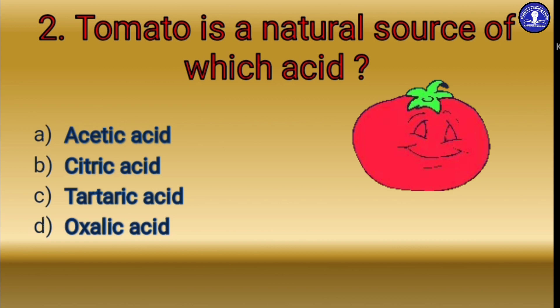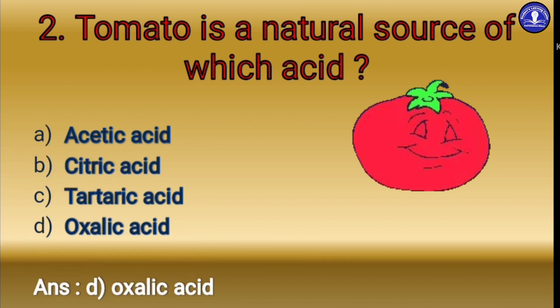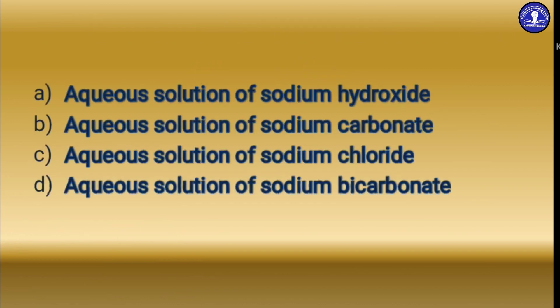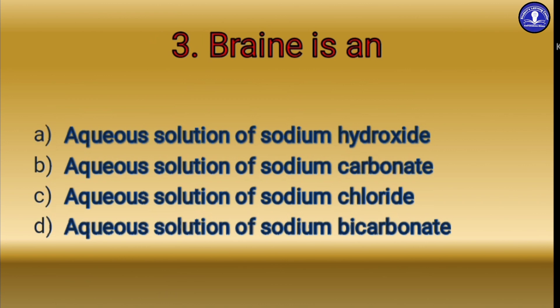Let's move to the next question: tomato is a natural source of which acid? As we all know, the natural source of acetic acid is vinegar; fermenting fruits also make acetic acid naturally. The natural source of citric acid is found in grapes, bananas, tamarinds, etc. So option D should be correct — tomato is a natural source of oxalic acid.